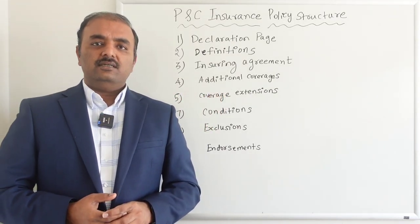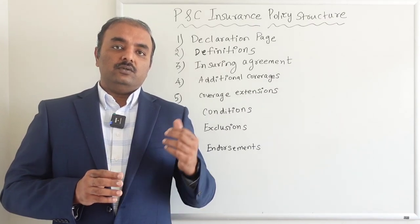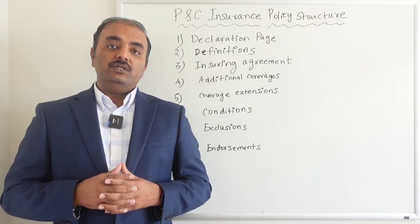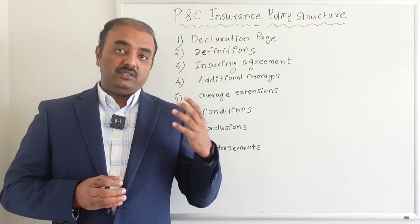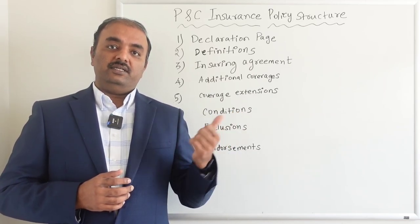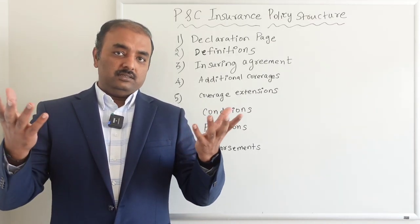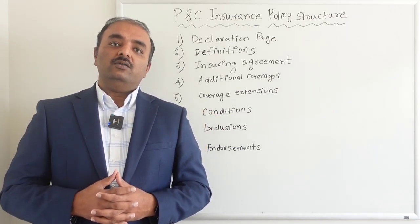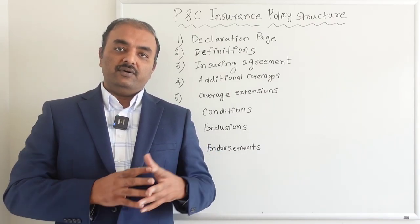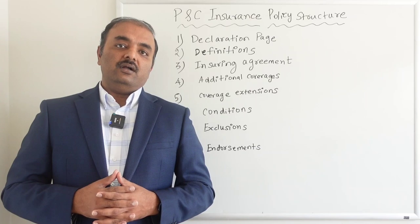Coverage extensions are similar to additional coverages, but the key difference is that to avail a coverage extension you need to satisfy the eighty percent co-insurance clause. Co-insurance means you need to have eighty percent of the coverage limit to qualify. One good example is if you have a commercial building and you acquire a new building nearby — by default the insurance company will cover that new building up to a certain limit, like twenty-five thousand dollars. That is what we call a coverage extension.